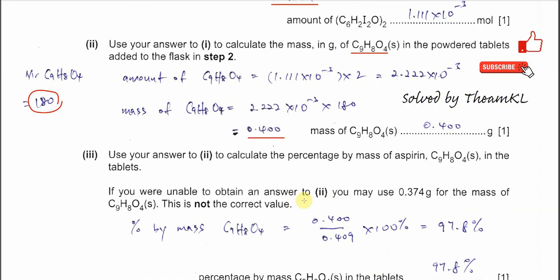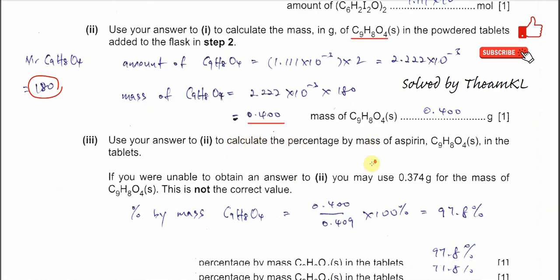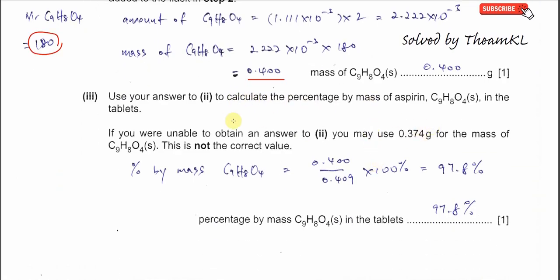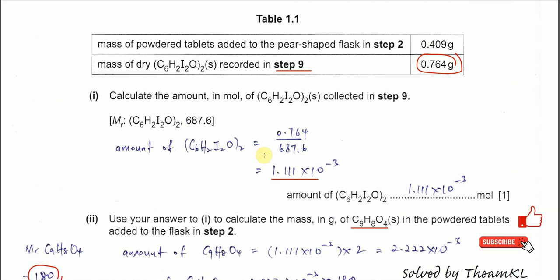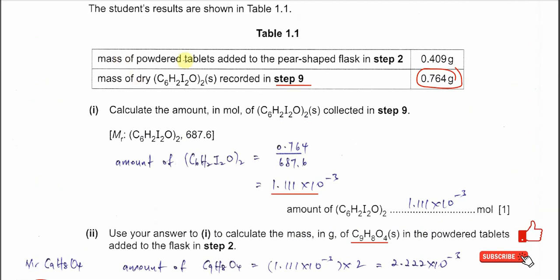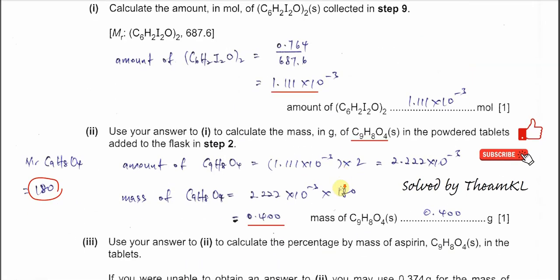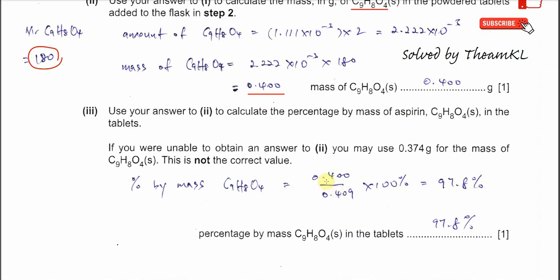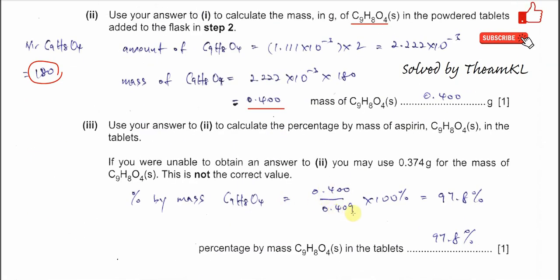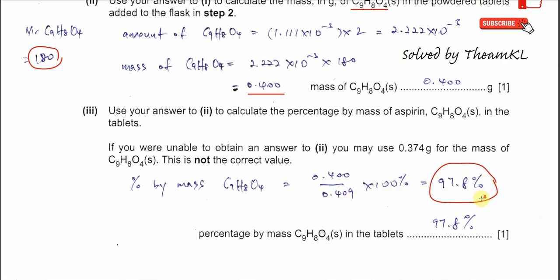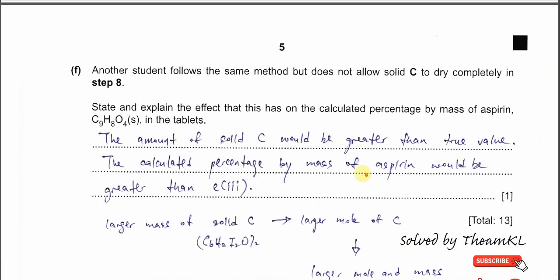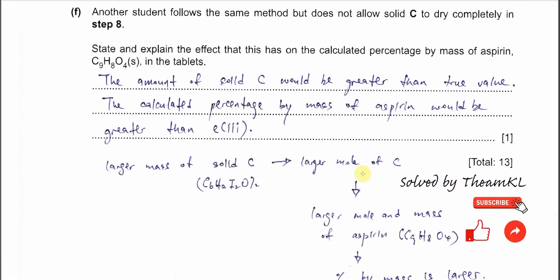The mass of powder tablets is 0.409. Use the value 0.4 over 0.409 times 100%, we get 97.8%.